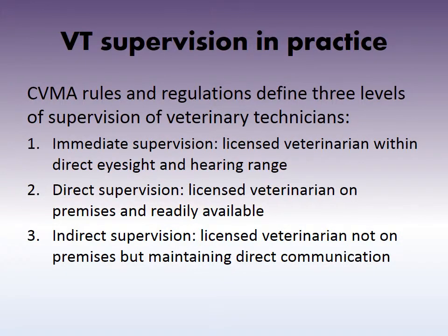There are different types of supervision for a veterinary technician within a hospital, and the CVMA rules and regulations define three levels. Immediate supervision means the vet is right there beside you — within direct eyesight and hearing range. Direct supervision means the veterinarian is in the hospital but not right beside you; for example, they could be in an exam room while you work in the treatment area. Indirect supervision means the veterinarian is not necessarily in the building, but can still be reached by phone — you can perform procedures under indirect supervision as long as the veterinarian is able to be contacted.